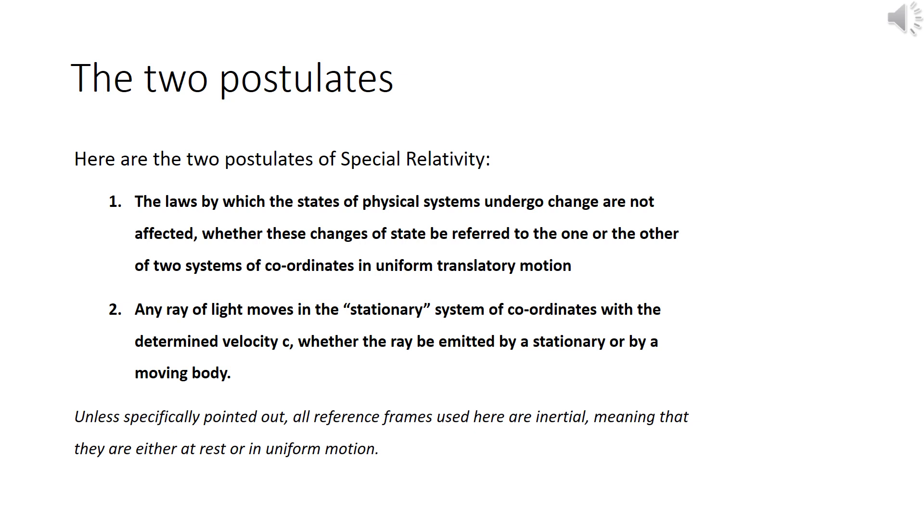Second, any ray of light moves in a stationary system of coordinates with the determined velocity c, whether the ray be emitted by a stationary or by a moving body.